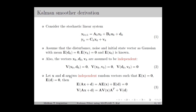We use an important relation for the expectation and variance of an affine transformation. If x and d are two independent random vectors with expectation 0, then E[Ax + d] = 0, since E[x] and E[d] are 0. Similarly, Var[Ax + d] = A·V(x)·A^T + V(d). The derivation of these results was given in lecture 3, and we use them extensively in the derivation of the Kalman estimators.